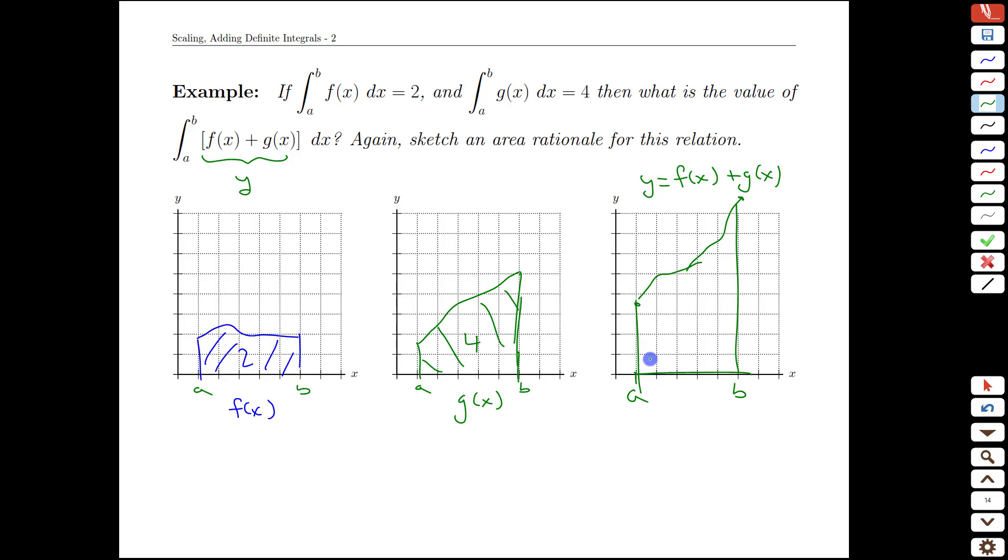That combined graph on the interval a to b, you could actually subdivide it. You could say here's the f part of it underneath, and then what we did is put the g on top of it, stack them vertically, and so unsurprisingly.